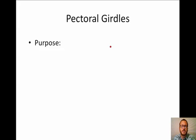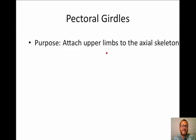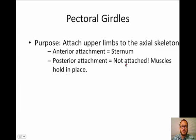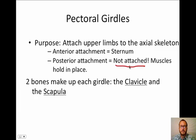So what is the purpose of the pectoral girdles? Their purpose is to attach the upper limbs to the axial skeleton. Anteriorly, they're attached to the sternum — you can feel your sternum at the front. The front attachment is the collarbone. Posteriorly, crazy enough, there is no bony attachment — muscles actually hold your pectoral girdles in place, allowing fluid motion with your shoulders. Two bones make up each girdle: the clavicle and the scapula.